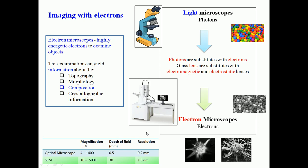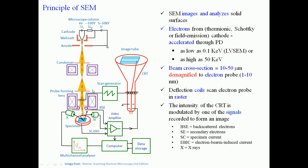Electron microscopy uses highly energetic electrons of the order of a few keV energy—for example, 50 keV—for examination of the surface of objects. This examination yields information about the topography, morphology, and crystallography of the sample surface, in addition to chemical composition. In this lecture, I will focus on the application of scanning electron microscopy coupled with EDAX, that is, chemical composition analysis.